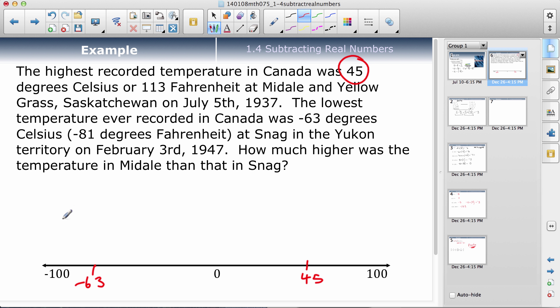So the question is how much higher was the temperature in Middale than in Snag? So one way you could do that is you could say 45, you're trying to find the difference, right? So you'd subtract this number here, a negative 63. So I've got 45 subtract a negative 63. I can do what we've been looking at. Add the opposite. So I'll change 45 minus. I'll change that to a plus. And the negative 63 now becomes a positive 63. So now I've got same sign, add, keep the sign. So the answer would be 108. So positive 108.